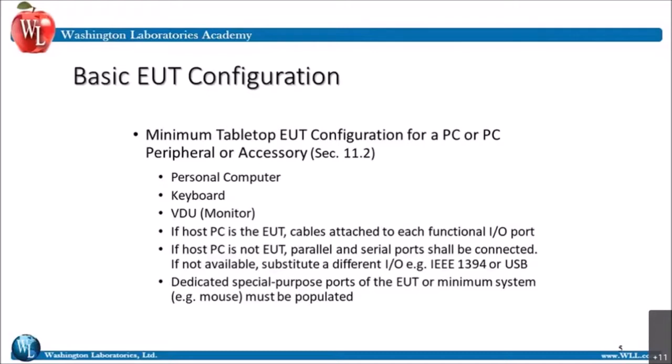You have to have a keyboard. You have to have a monitor. If your host PC is the EUT, the cables have to be attached to each I/O port. So if you have four USB ports, all four of those have to have cables coming off. If the PC is not the EUT, the parallel and serial ports shall be connected, or if not available, suitable different I/O devices. Input/output cabling has to be in place. Sometimes that cabling itself can be used as a radiating element for the device. Any dedicated special-purpose ports like a mouse or joystick also apply.